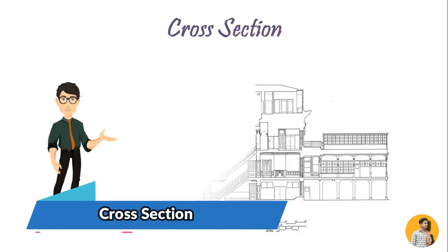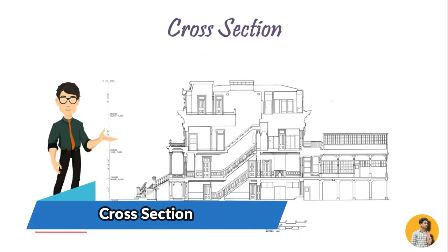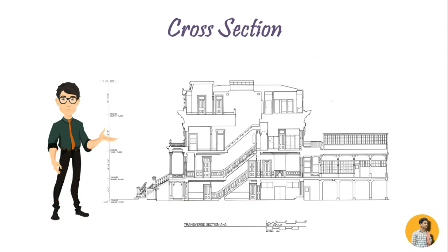Cross section, also simply called a section, represents a vertical plane cut through the object in the same way as the floor plan is a horizontal section viewed from the top. Everything cut by the section plane is shown as a bold line, often with a solid fill to show objects that are cut through, and anything seen beyond is generally shown in a thinner line.